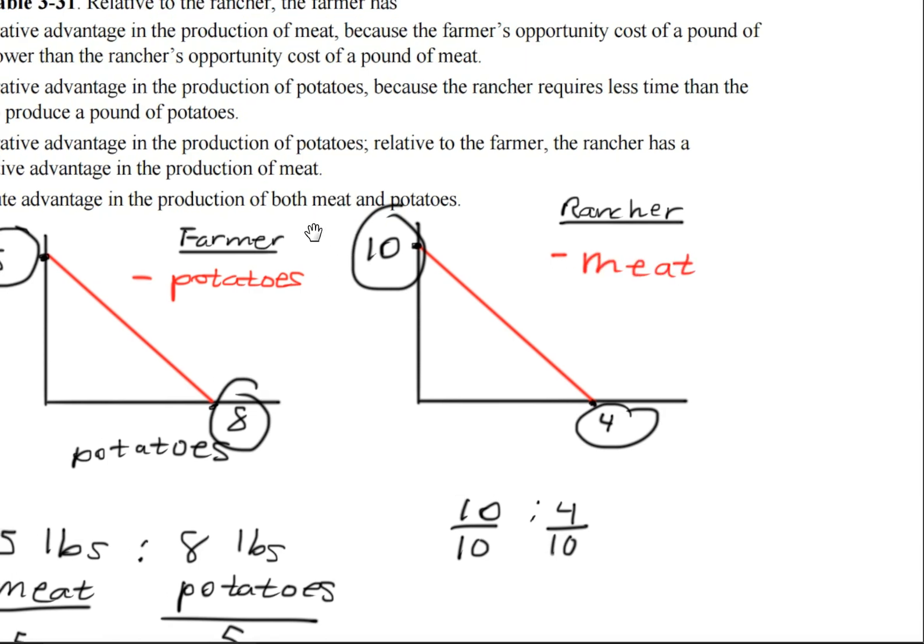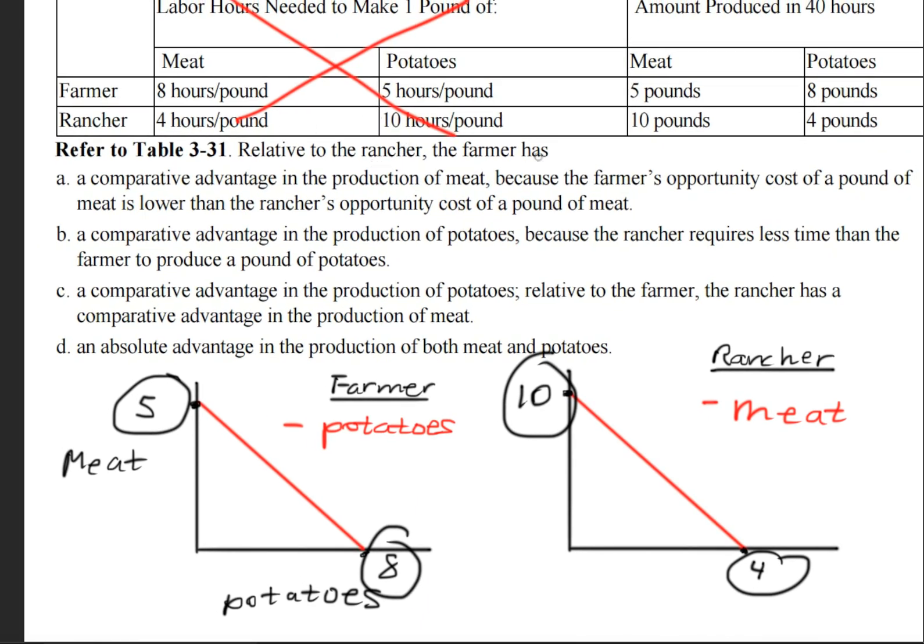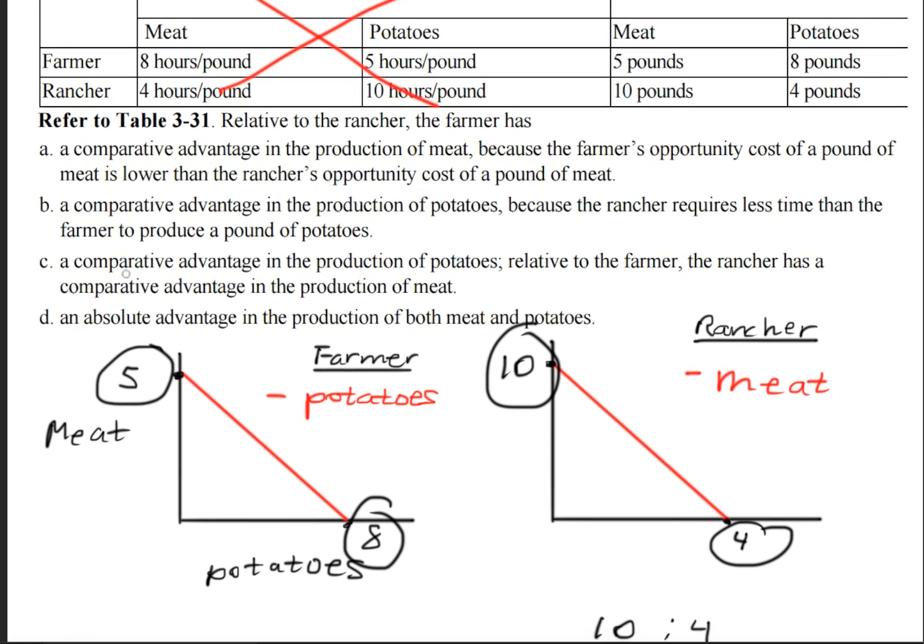So let's take a look at our answer choices here. Relative to the rancher, the farmer has a comparative advantage in the production of potatoes. That's right. Relative to the farmer, the rancher has a comparative advantage in producing meat. That's also true. So our answer for this question is C.